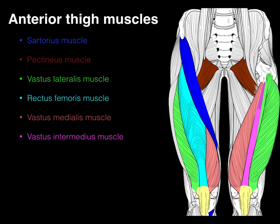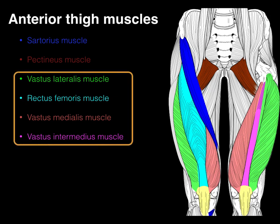So we have the muscles of sartorius, pectineus, and our four quadriceps muscles. All four quadriceps insert on the tibial tuberosity and are all going to extend the knee.